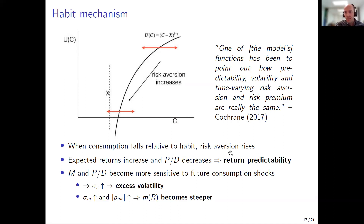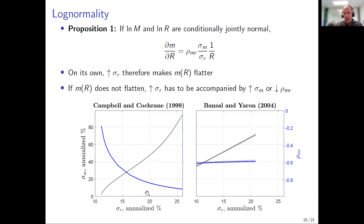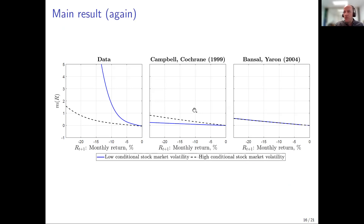These are the two things the habit model explains — predictability and counter-cyclical volatility — and they rely on time-varying risk aversion. The pricing kernel becomes more volatile as you move toward the habit. Returns also become more volatile as the price-dividend ratio becomes more sensitive to consumption shocks. Because both are more sensitive to consumption shocks, they become more correlated with one another. Returns and the pricing kernel become more volatile and more correlated when volatility is high, because volatility is high when risk aversion is high. You can't get rid of this without fundamentally changing the mechanism of the model.